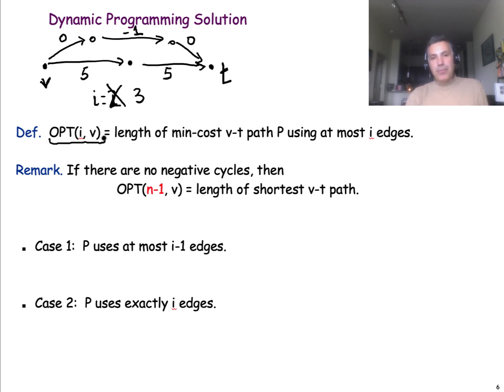So, more generally, let's define as OPT(i, V) the length or cost of the minimum cost path from V to the target T if we can only use at most I edges. So, ultimately, we want to solve this problem. We want to solve the problem of how to find the minimum cost path from the node V to the node T if we can go through at most N minus 1 edges. Why N minus 1? Because we know that if there are no negative cycles, any simple path in the network can have at most length of N minus 1 edges.